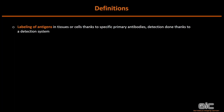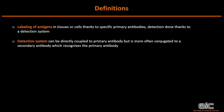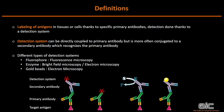The labeling of antigen in tissue is done thanks to primary antibodies and a detection system. The detection system can be directly coupled to the primary antibody, but more often it is conjugated to a secondary antibody that will itself recognize the primary antibody. We have different types of detection systems depending on the technique we use. You have the antigen, the primary antibody, and the case where the primary antibody is directly coupled to a fluorophore for fluorescence microscopy — or more commonly, the antigen recognized by the primary antibody with a secondary antibody coupled to the fluorophore.